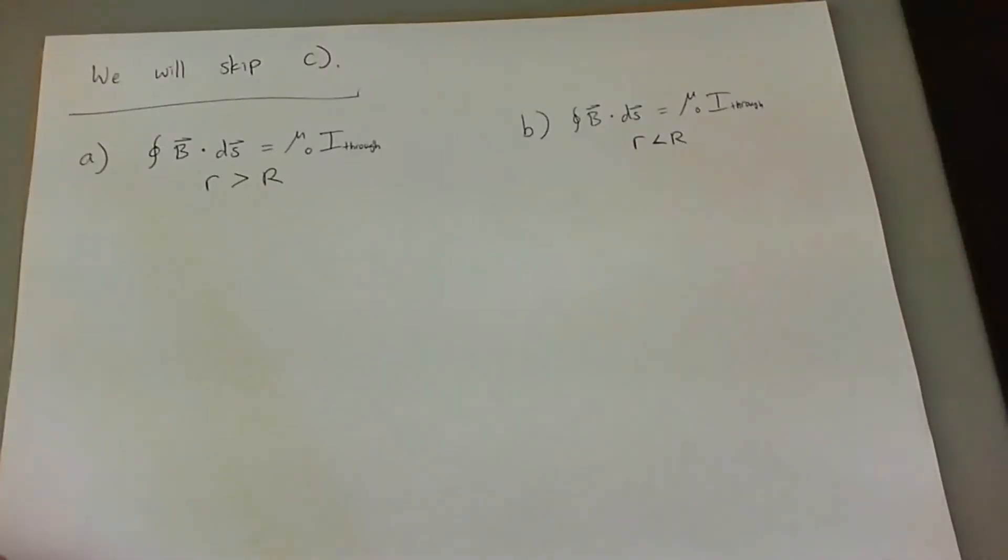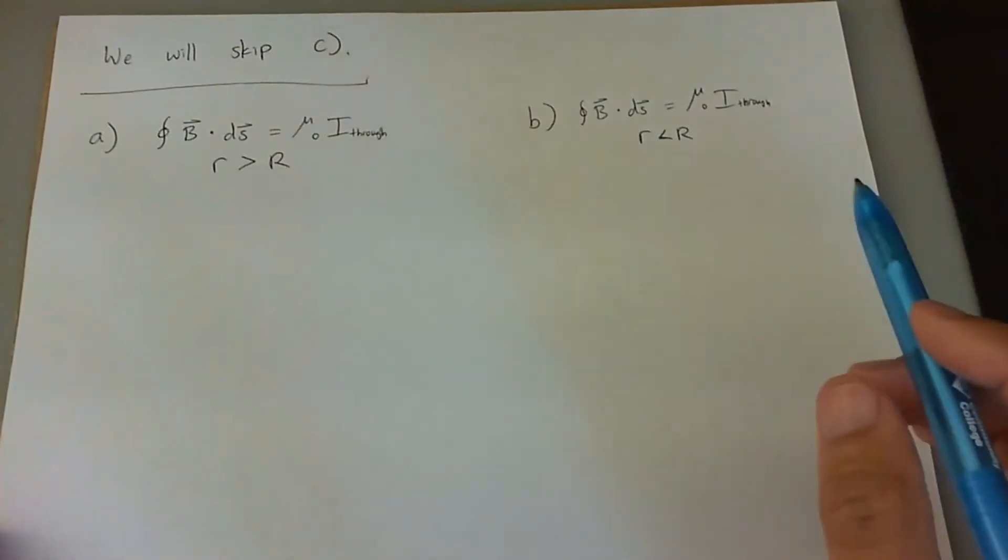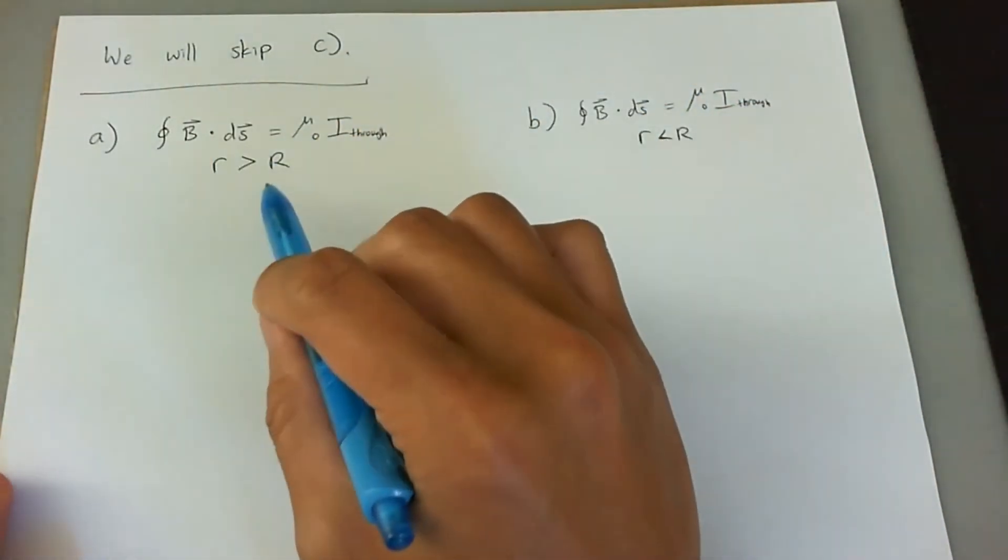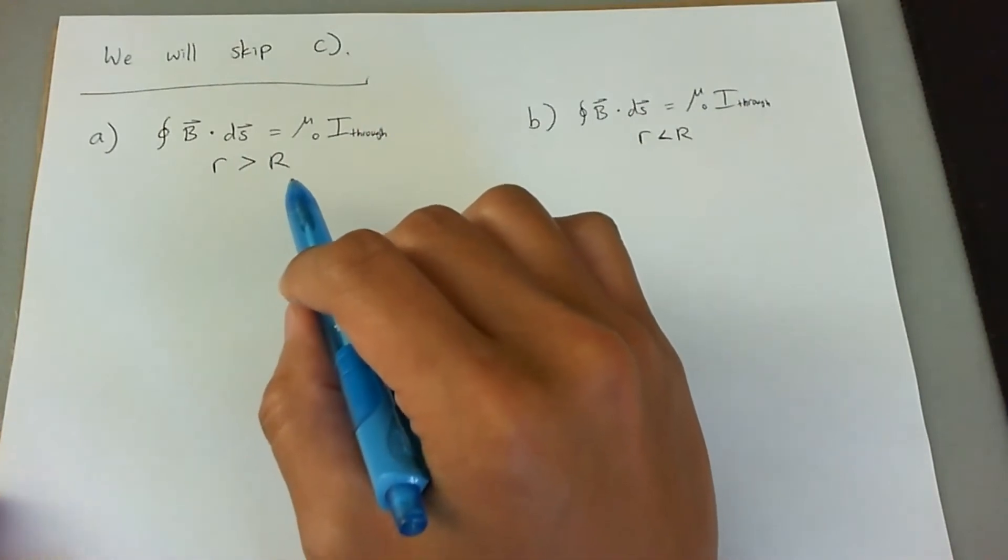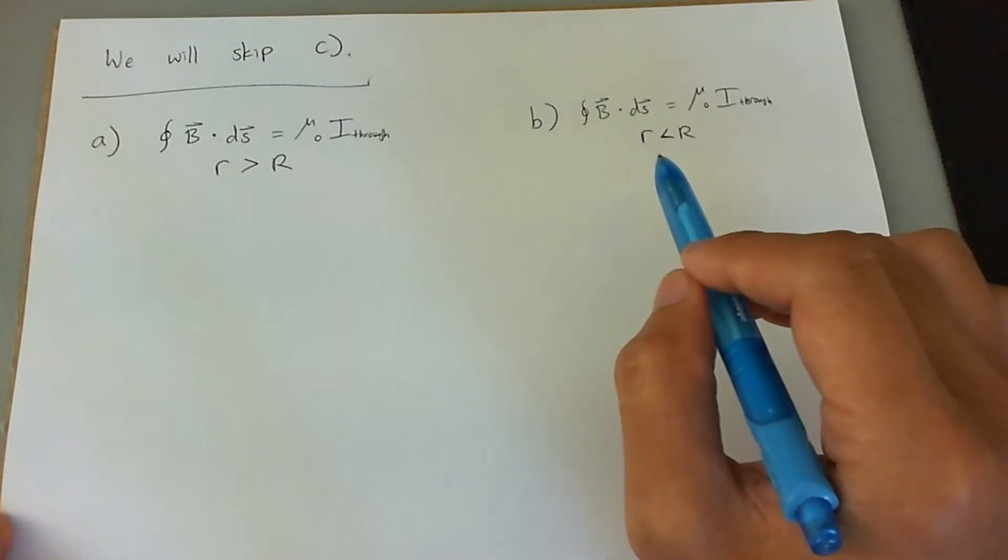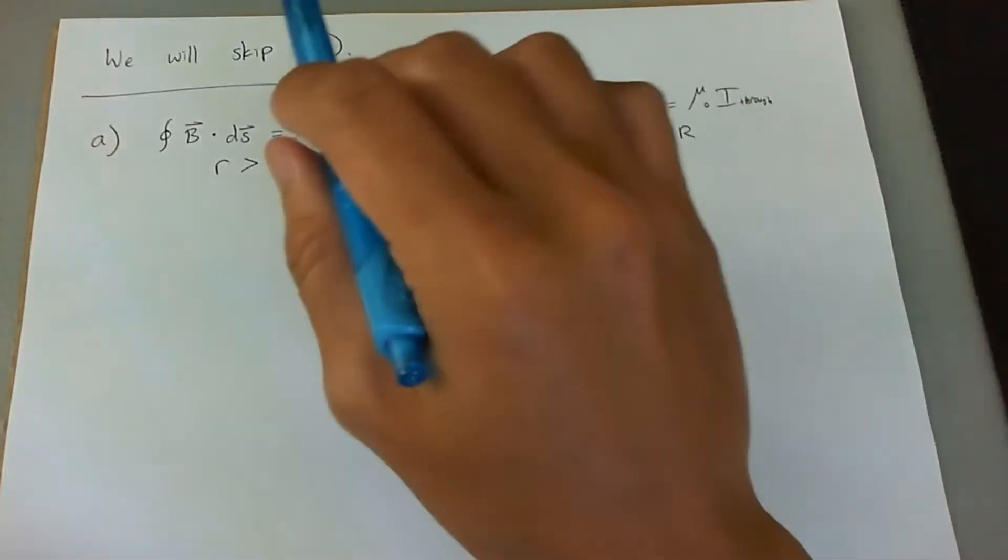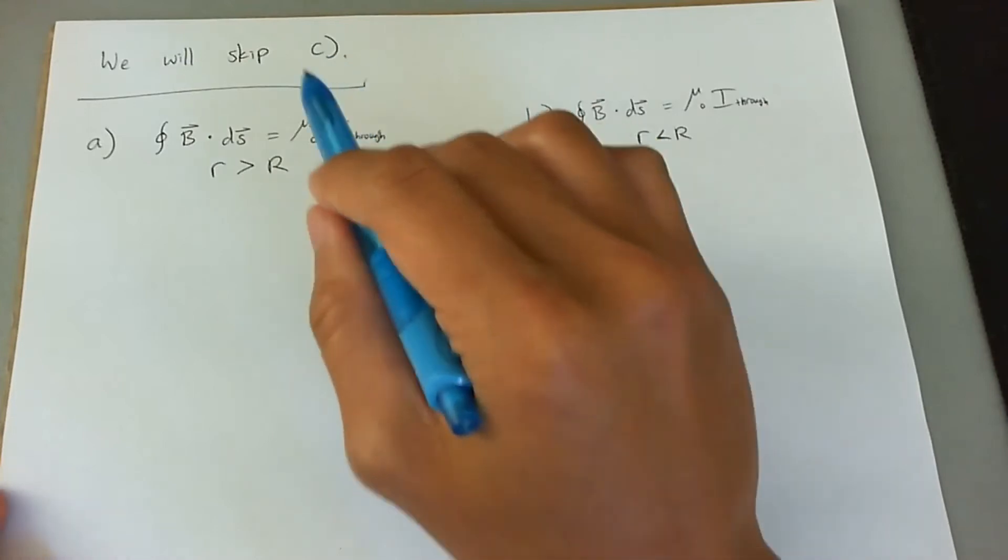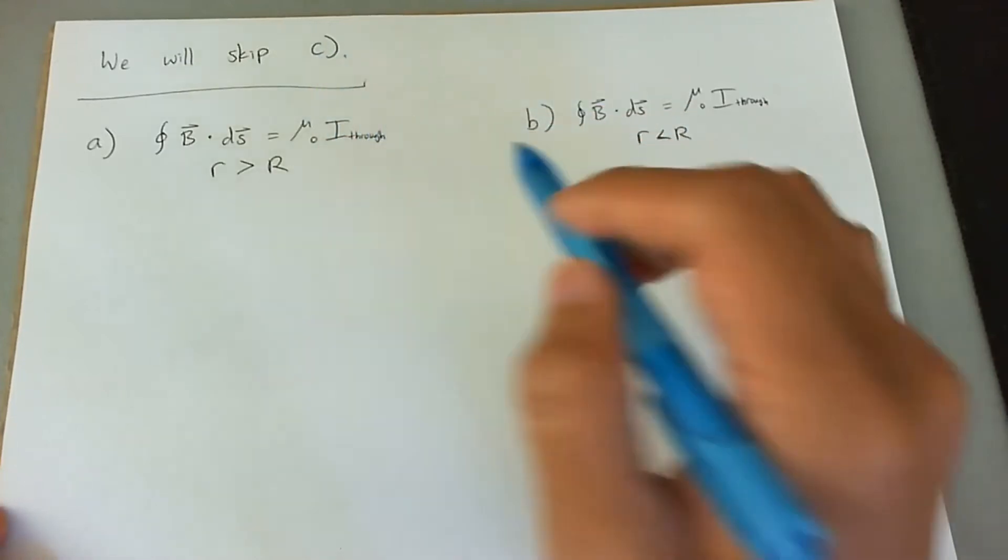I'm going to skip part C and just do parts A and B. The reason is because I just want to derive the equation for a point in space outside the cylinder and a point in space inside the cylinder in terms of looking for the B field. But I'm not going to actually apply them and put in numbers to get a particular value. That's something that you can do as a plug and chug.